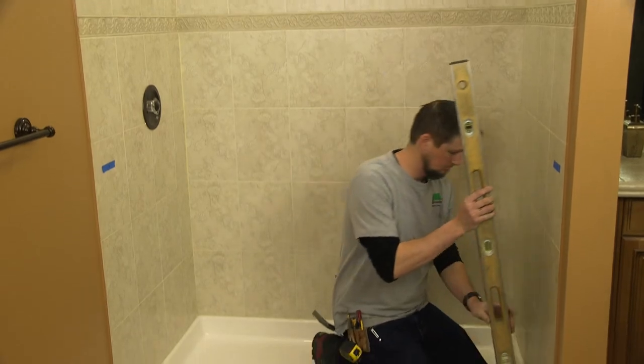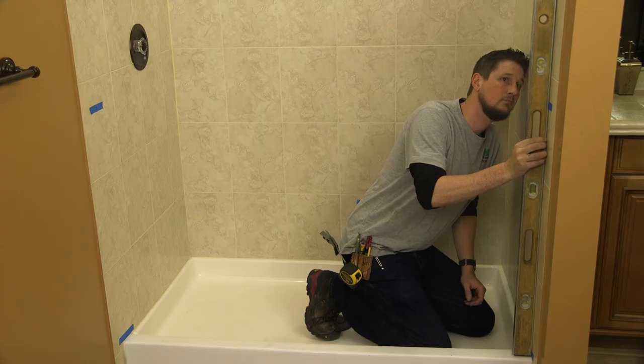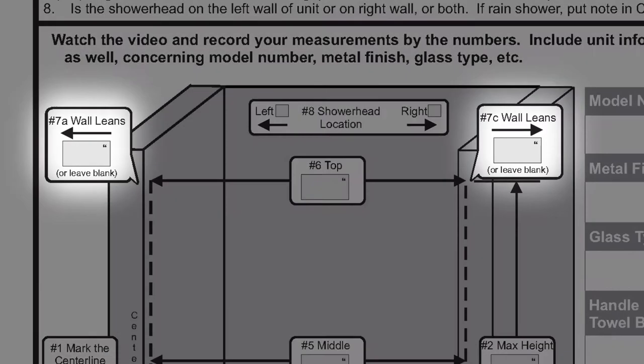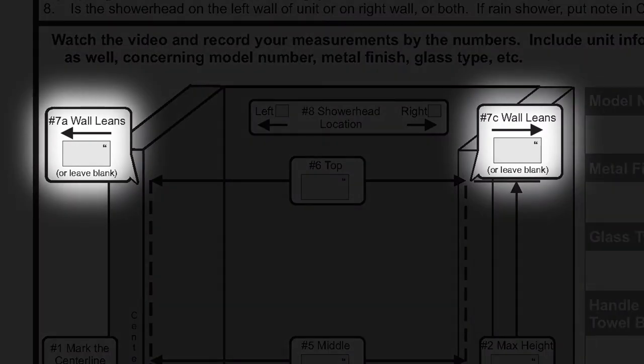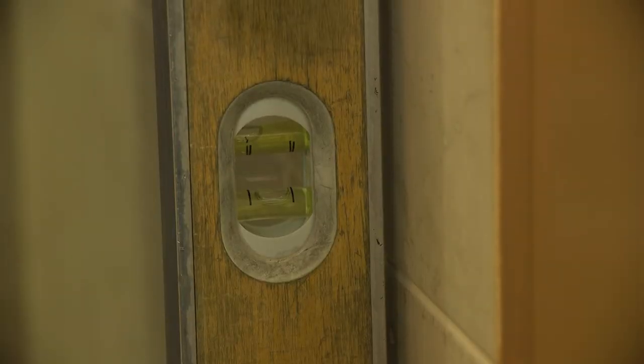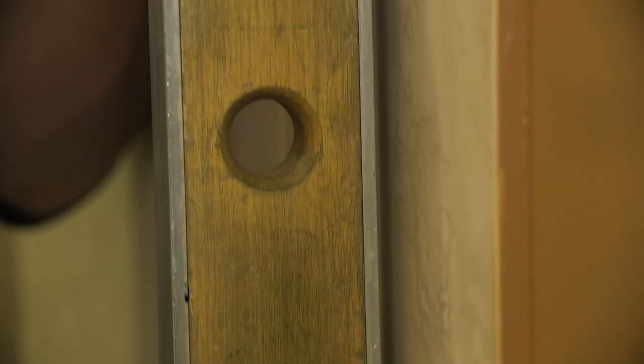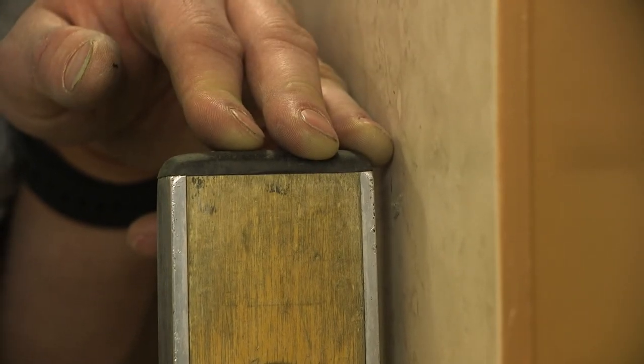To find out, place the level upright along the center line on one of the walls at the base and center the bubble. If there are no gaps between the walls and the level, the walls are plumb. Leave the number seven boxes blank. However, if there is a gap at the top or the bottom of the level, you can use shims to help keep the level stable while you measure.